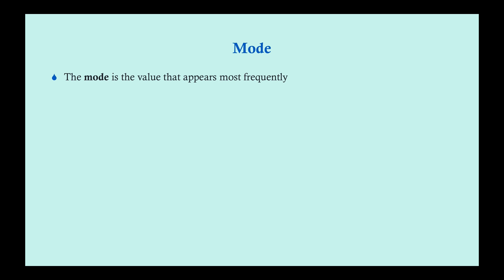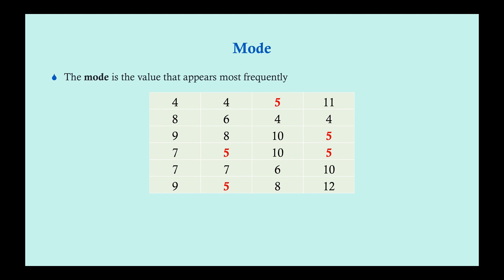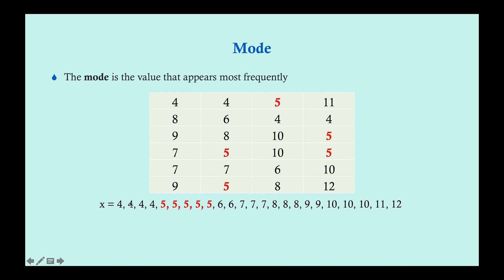The mode is the value that appears most frequently. You look at your table and find the value that shows up most often. You can have more than one mode — here, five comes up five times, the most. But if four also came up five times, you'd have two modes: four and five. We call that bimodal. A bimodal distribution has two high points on the curve, meaning those values show up the most.